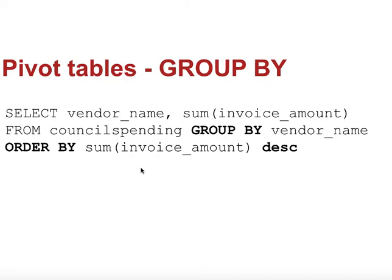Another very useful command is GROUP BY, which essentially creates a pivot table. In this example, we're selecting the column vendor_name and a SUM of invoice_amount from the council_spending table, but grouping by vendor_name. What that means is it will calculate the sum and group the sums by vendor name — so we get a total of invoice_amount for each different vendor. GROUP BY gives you what you'd get in a pivot table: an amount per vendor. ORDER BY then formats that result so it's ordered by the sum of invoice_amount descending — from largest to smallest. The result is a table with all different vendors listed with a sum for each, from largest to smallest.